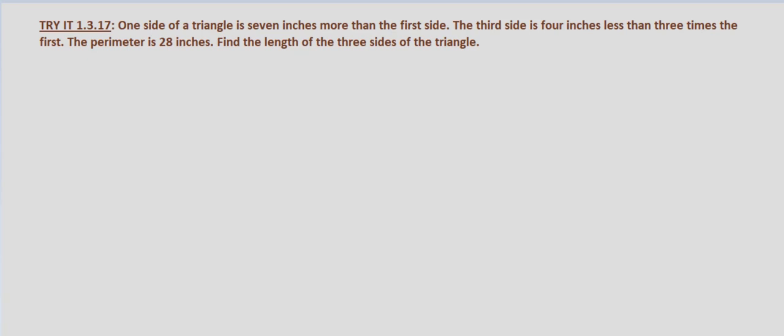The first thing I would like to do — we need to eventually draw the picture, but first let's define the sides in terms of variables so we can label our picture. Let's say A is the first side. One side is seven inches more than the first side, so A plus seven equals the second side. The third side is four inches less than three times the first, so three times the first side minus four equals the third side.